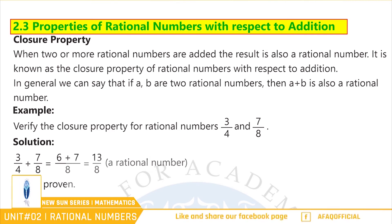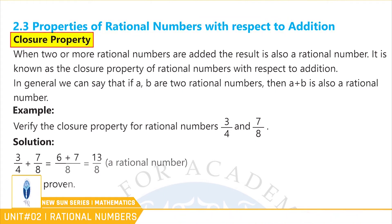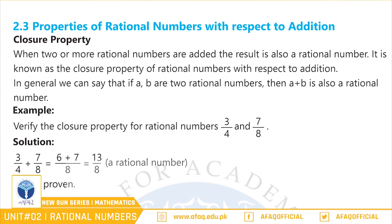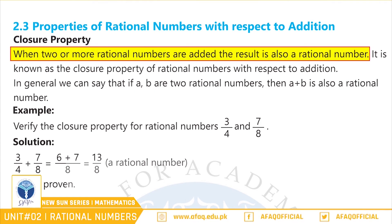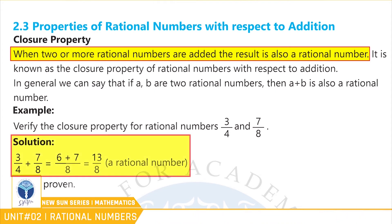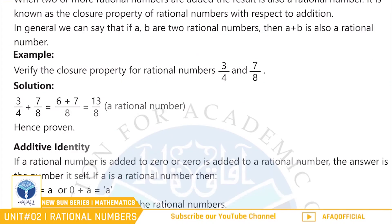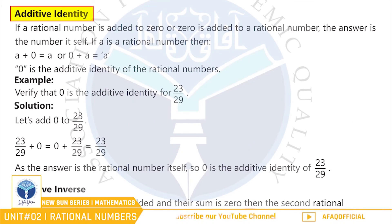Good بچو! اب ہم اپنے اگلے topic 2.3 - Properties of Rational Numbers with Respect to Addition, page 26 پر جائیں گے۔ Closure Property: بچو closure property کہتی ہے کہ جب دو یا دو سے زیادہ rational numbers add ہوں گے تو ان سے آنے والا جواب بھی ایک rational number ہوگا۔